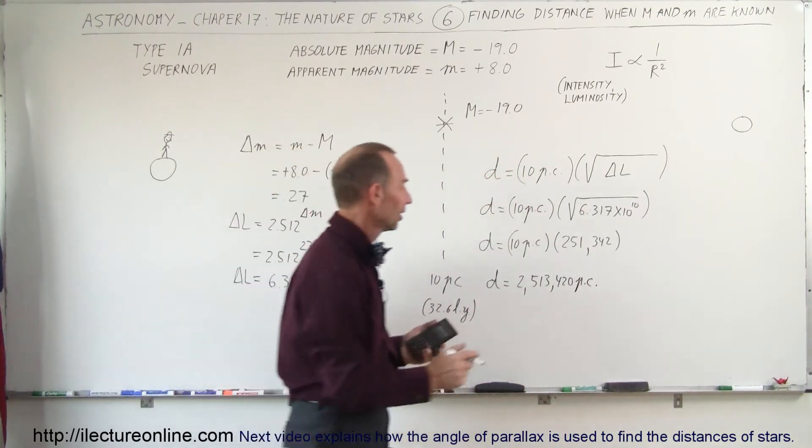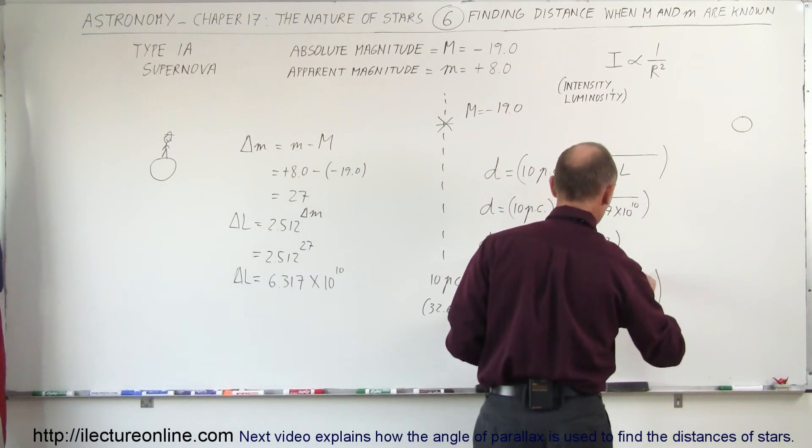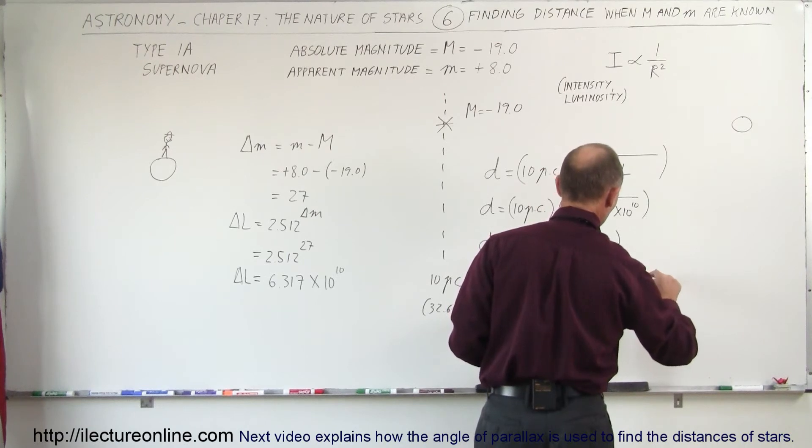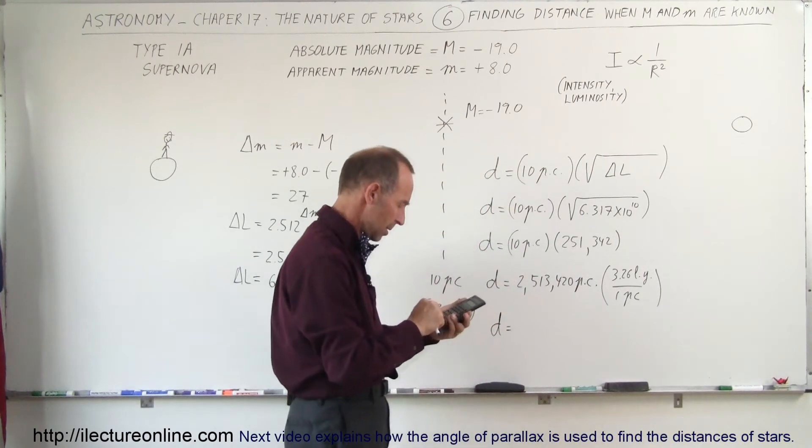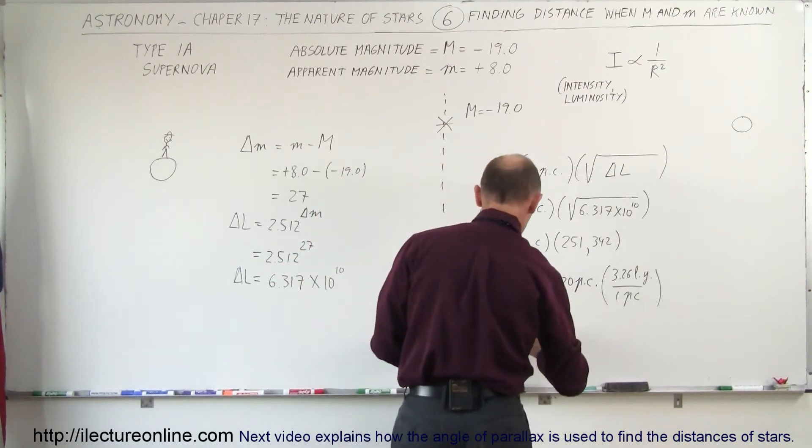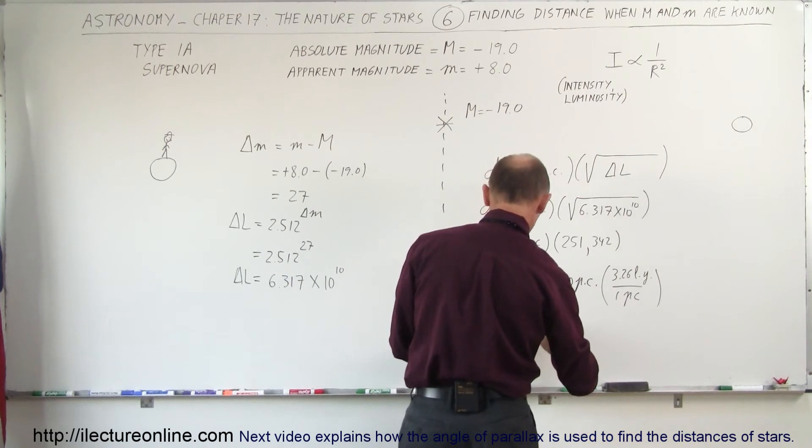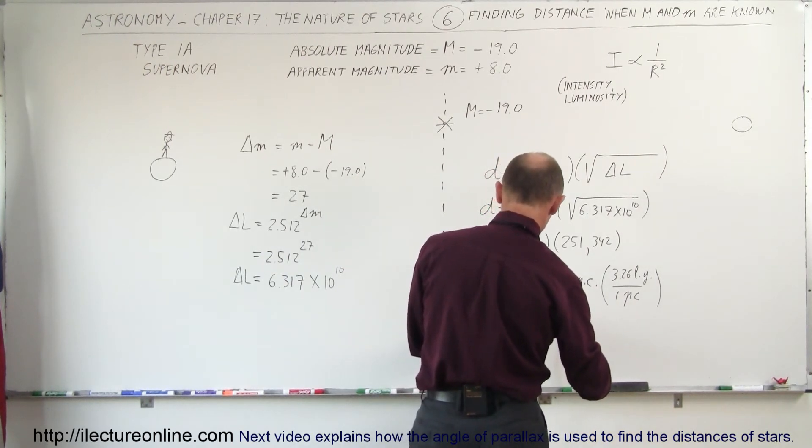And of course, if we want to convert it to light years, then we have to multiply this times the ratio of 3.26 light years for 1 parsec. And so the distance in light years would be...